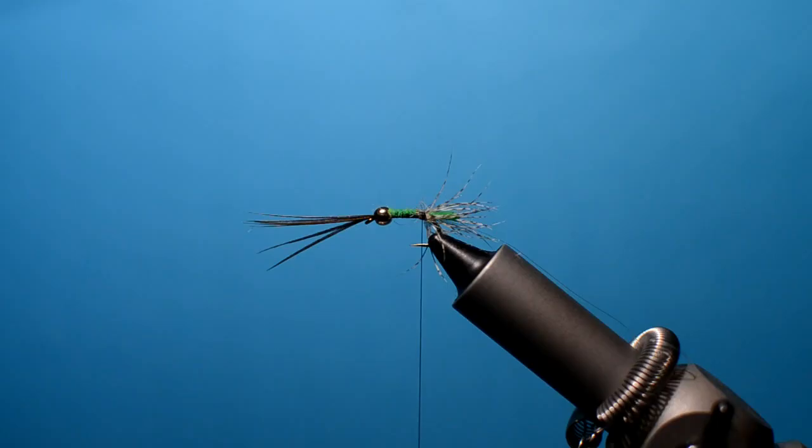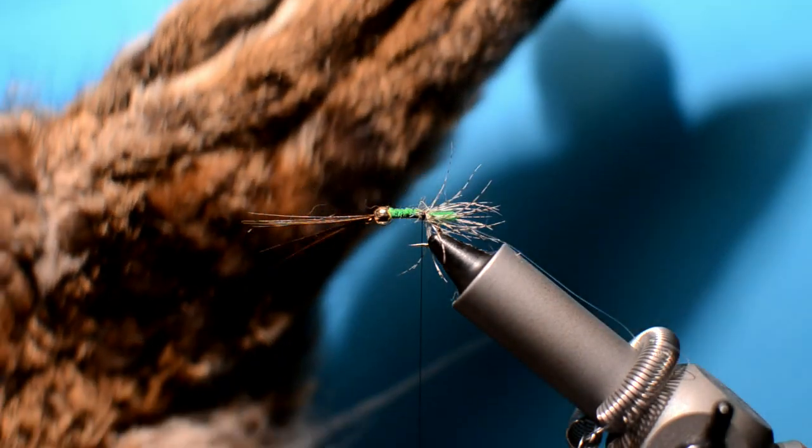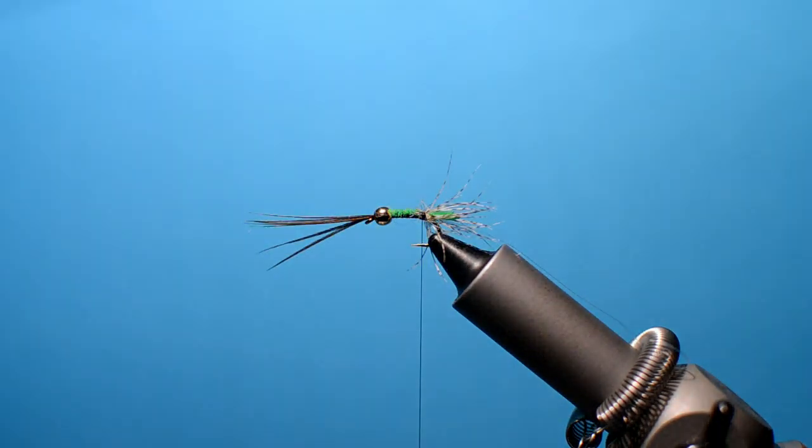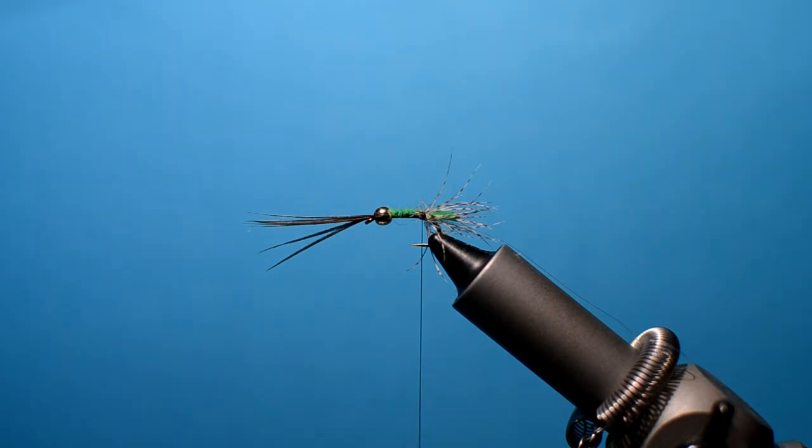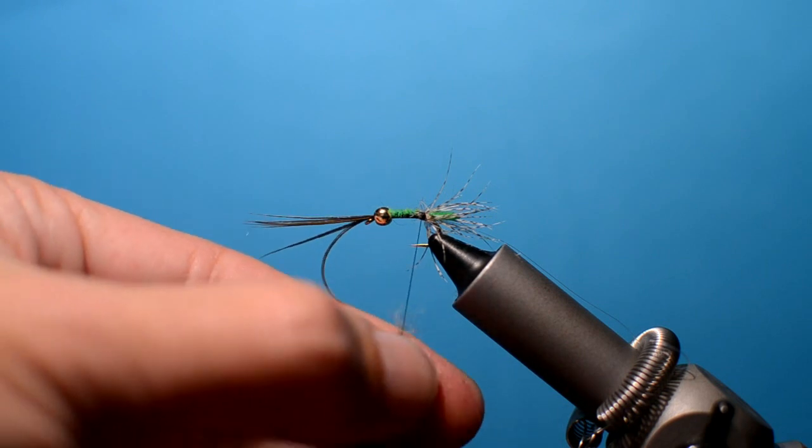And what we're going to do is just pull off with your finger and thumb some fur from around the mask itself. Pull off and we just dub that onto the line, onto your thread.